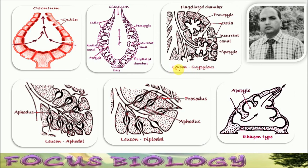In Leucon type, you can see this one is the oval rounded flagellated chamber, which forms an oval chamber that is flagellated, and this one is the radial canal or excurrent canal. In Eurypylus, there is no aphodus or prosodus — both are absent.